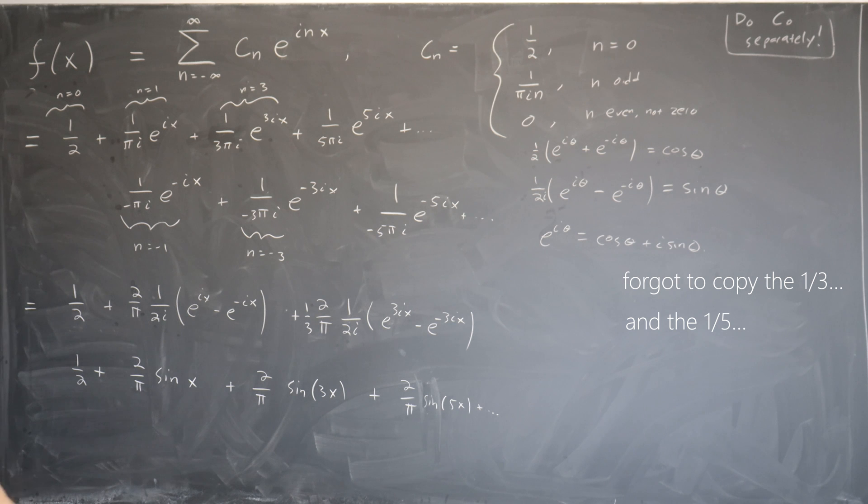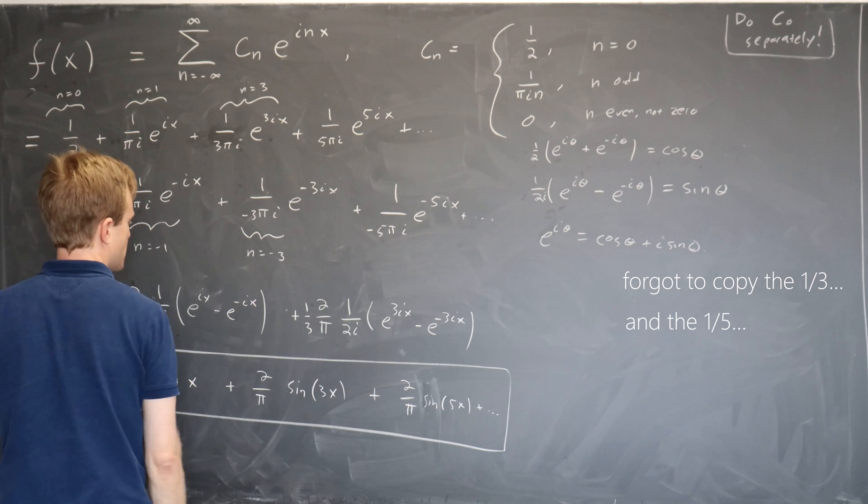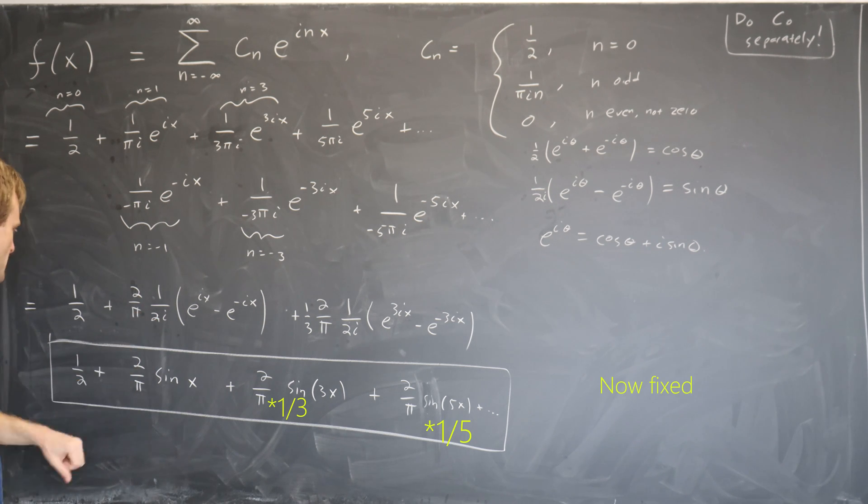And that's our Fourier series. The step function can be written in the manifestly real form. No i's anywhere, just good old fashioned sines and cosines. And this is the answer that I had presented you with in the last video.